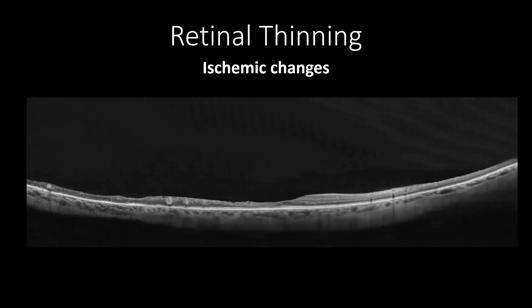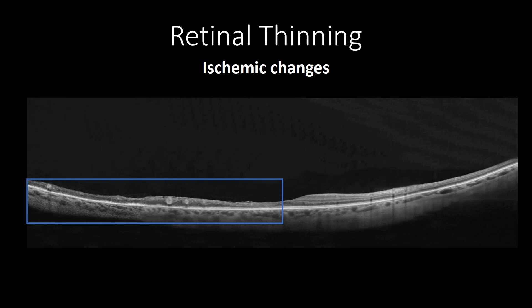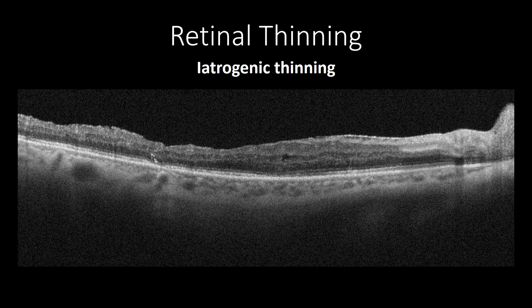Thinning of the retina commonly occurs due to ischemic changes, as shown in this vertical wide-field OCT cross-section of ischemic branch retinal vein occlusion, showing homogeneous contour thinning in the inner retinal tissue in areas of retinal ischemia, along with large hyperreflective dots representing the occluded vessels. In contrast, retinal contour thinning can be irregular, as this cross-sectional OCT shows irregular focal iatrogenic thinning of inner retinal tissue during pars plana vitrectomy.